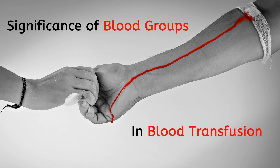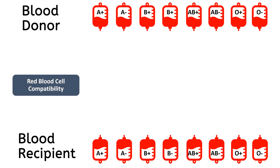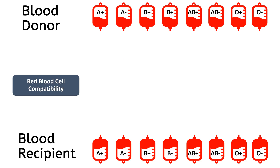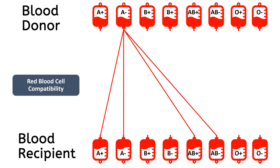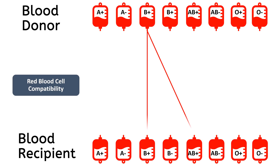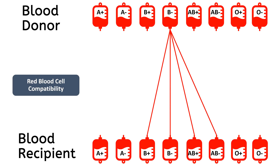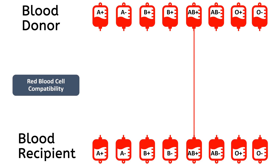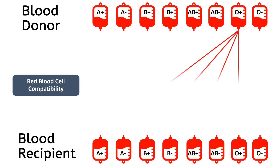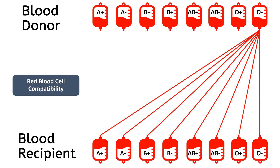Regarding the significance of blood groups in blood transfusion: blood group A positive can donate to A positive and AB positive recipients. A negative can donate to A positive, A negative, AB positive, and AB negative. B positive can donate to B positive and AB positive. B negative can donate to B positive, B negative, AB positive, and AB negative. AB positive can only donate to AB positive. AB negative can donate to AB positive and AB negative. O positive can donate to A, B, AB, and O positive. O negative can donate to any blood group.